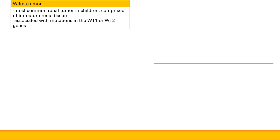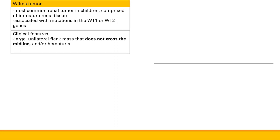Now, tumors in children. Wilms tumor is the most common renal tumor in children, made of immature renal tissue. It is associated with mutations in the WT1 and WT2 genes. The clinical features include a large unilateral flank mass that does not cross the midline, and there may or may not be hematuria. This is the key distinction — Wilms tumor does not cross the midline — in contrast to neuroblastoma.